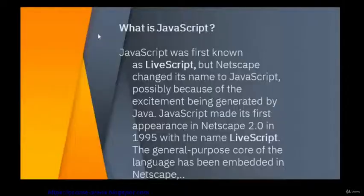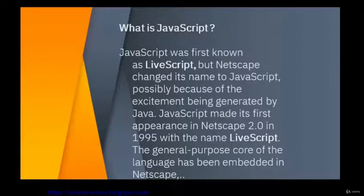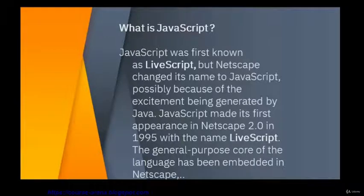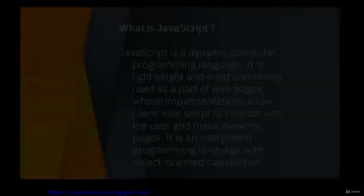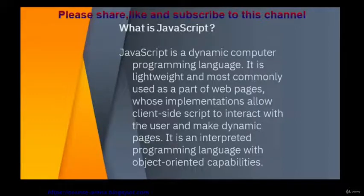In this program you will learn about JavaScript. What is JavaScript? JavaScript was first known as LiveScript, but Netscape changed the name to JavaScript, possibly because of the excitement being generated by Java. JavaScript first appeared in Netscape 2.0 in 1995 with the name LiveScript. The general-purpose core of the language has been embedded in Netscape. JavaScript is a dynamic computer programming language.